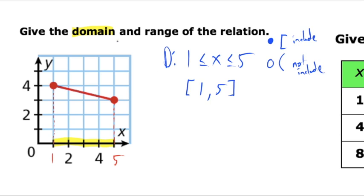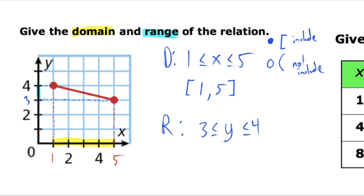We can also discuss the range. To find range, we draw lines horizontally to the y-axis from each endpoint. We can see that we're between y = 3 and y = 4. So our range is the numbers between 3 and 4. Since those are solid dots, they are included. Range is your y values, so it's the y values between 3 and 4. Using bracket notation, since both 3 and 4 are included, we use hard brackets on both sides: [3, 4].